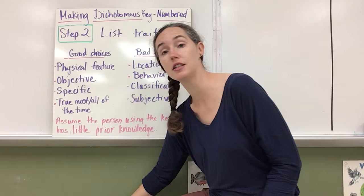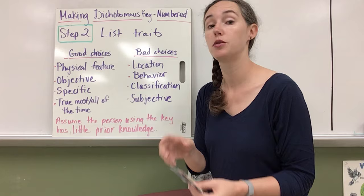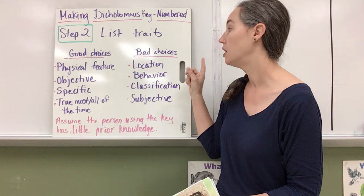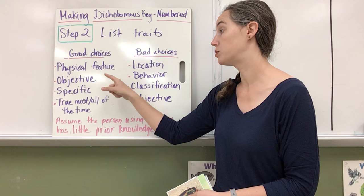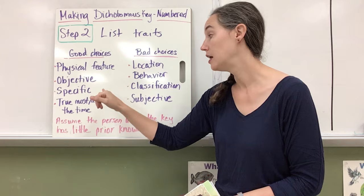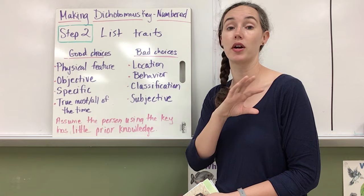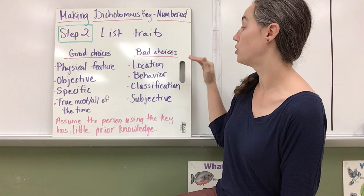Step two is you're going to list the traits of these organisms. So there are traits that are good to be used for dichotomous keys, and then there are some that are not so great. So good options are physical features, things that are objectively true, things that are specific, especially when it comes to the size, and something that's true most or all of the time, no matter if that organism is an adult or a juvenile.